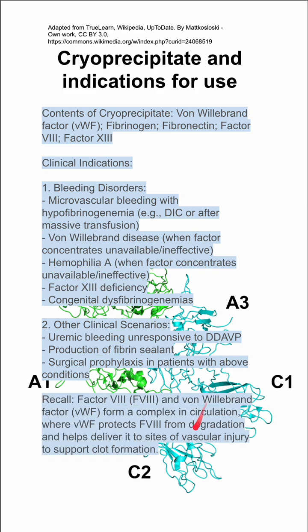Recall that factor VIII and von Willebrand factor form a complex in circulation, where von Willebrand factor protects factor VIII from degradation and helps deliver it to sites of vascular injury to support clot formation. If you remember the physiology of factor VIII and von Willebrand factor together, it's easier to remember the contents of cryoprecipitate because they are together in cryoprecipitate. Hope this was helpful.